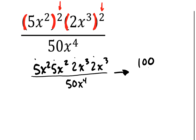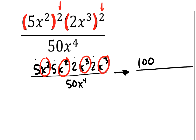In my numerator I have 100. The other thing I have is lots of factors of x. Counting them all up across the expanded numerator — there are 10 factors of x. So I can combine those and contract them as x to the 10th power. In my denominator, I've got a 50 and x to the 4th power.